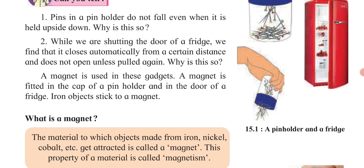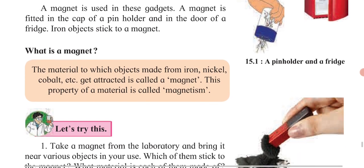So what actually is a magnet? A magnet is a material to which objects made from iron, cobalt, or nickel are attracted. The property of possessing this attraction is said to be magnetism.